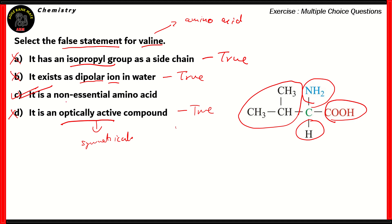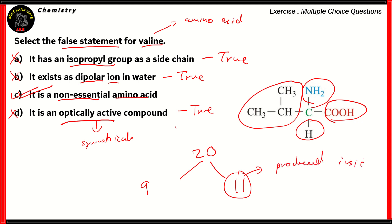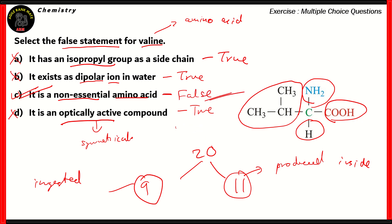The right answer is option C — it's a non-essential amino acid. Now, of the 20 amino acids, nine are essential to the human body and 11 are non-essential. The 11 non-essential amino acids can be produced inside the body. However, the nine essential amino acids must be ingested and absorbed from food — they cannot be created inside the body, which is why they are called essential. Valine is one of the essential amino acids. So calling valine a non-essential amino acid is a false statement, and since we're looking for the false statement, option C is the right option.